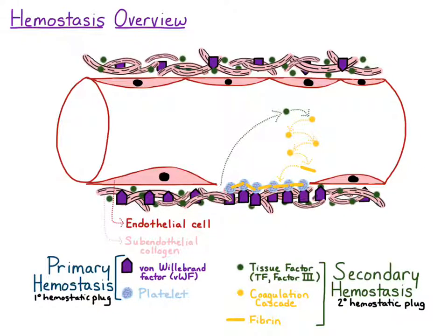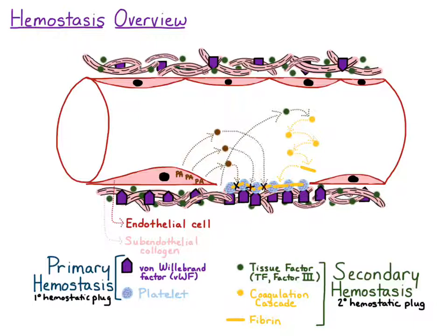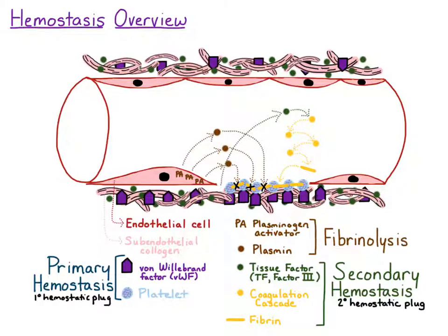Now this system has to have a counterbalance, because once the blood vessel heals itself, that platelet plug has to be controlled or dissolved away. So to do this, the endothelial cells release something called plasminogen activator, and this plasminogen activator activates plasmin. So it converts plasminogen to plasmin, which is represented as the brown circles. And this plasmin then dissolves or breaks down the fibrin. A combination of plasminogen activator and plasmin acting to break down fibrin is a process we call fibrinolysis.